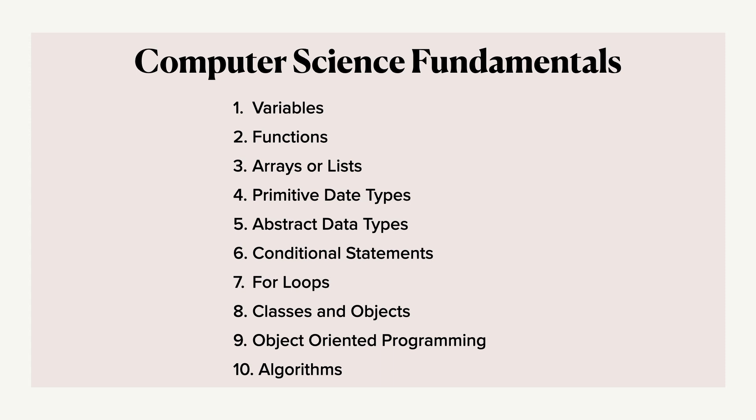Udemy courses have longer examples, longer projects, and more detailed coding. They give you the fundamentals of computer science: variables, functions, arrays, lists, primitive and abstract data types, conditional statements like if-else, for loops, object-oriented programming with classes and objects, and even algorithms. If you have a bit more time and want a certification, I'd definitely recommend Udemy.